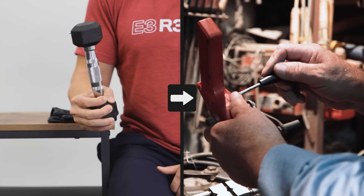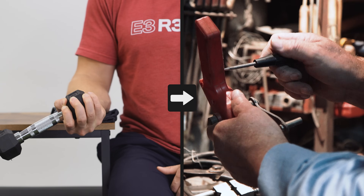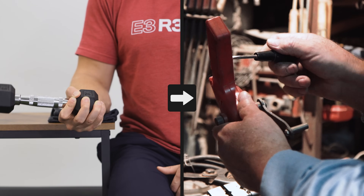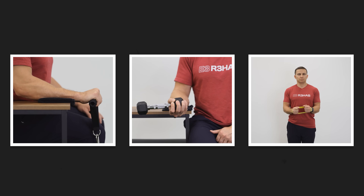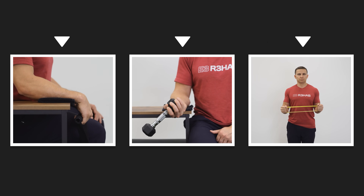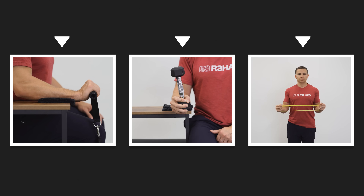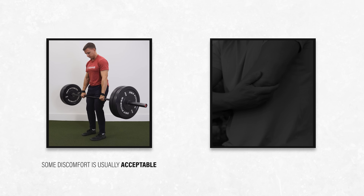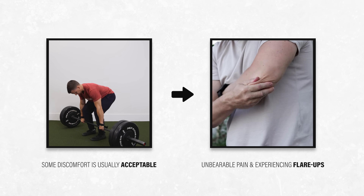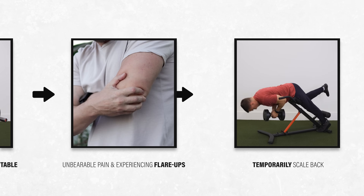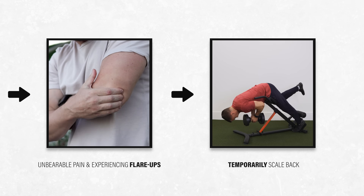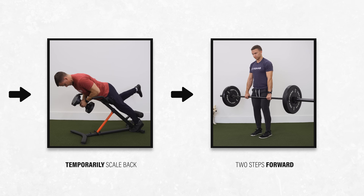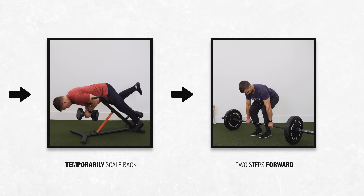Regardless of whether weakness is the cause or a result of disuse, this ties into the goal of improving your tolerance to various forms of loading and gradually restoring your function. Exercise prescription doesn't have to be overly complicated — oftentimes one to three exercises performed a few times per week is a great starting point. With regards to pain, some discomfort is usually acceptable during rehab. However, if you're consistently pushing into unbearable pain and experiencing flare-ups, you probably need to temporarily scale back. If you're a person who has restricted yourself from all exercise and activities for fear of worsening your condition, you might just need to give yourself permission to move.